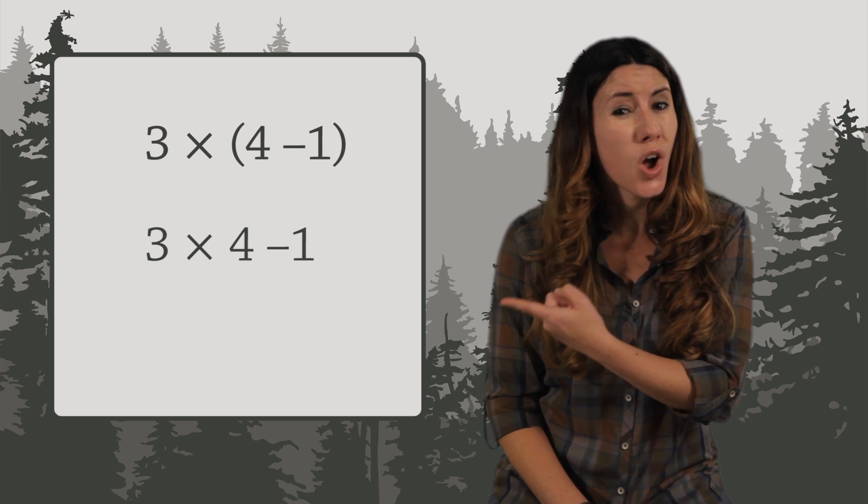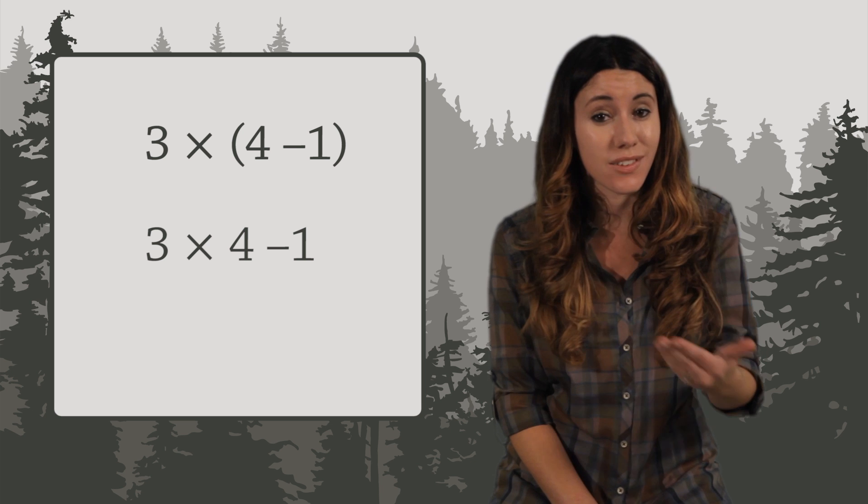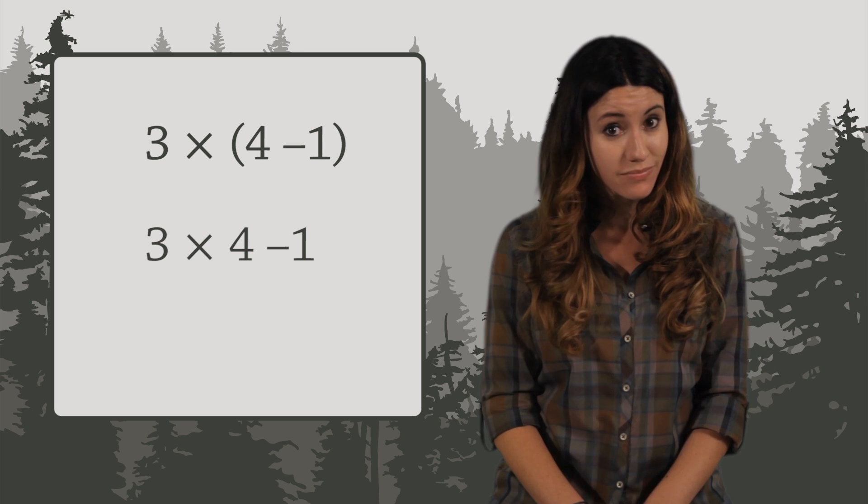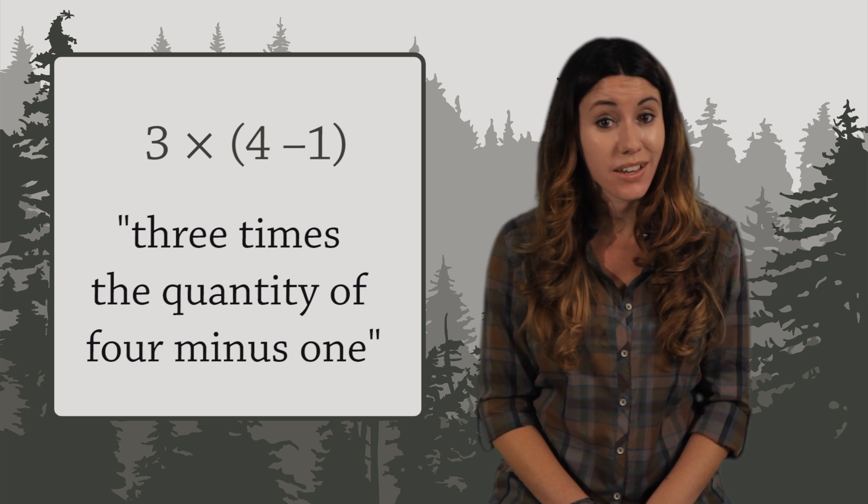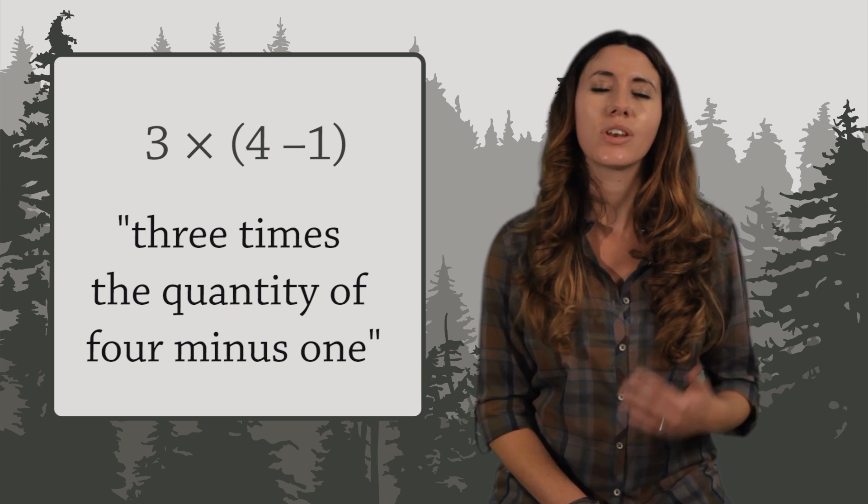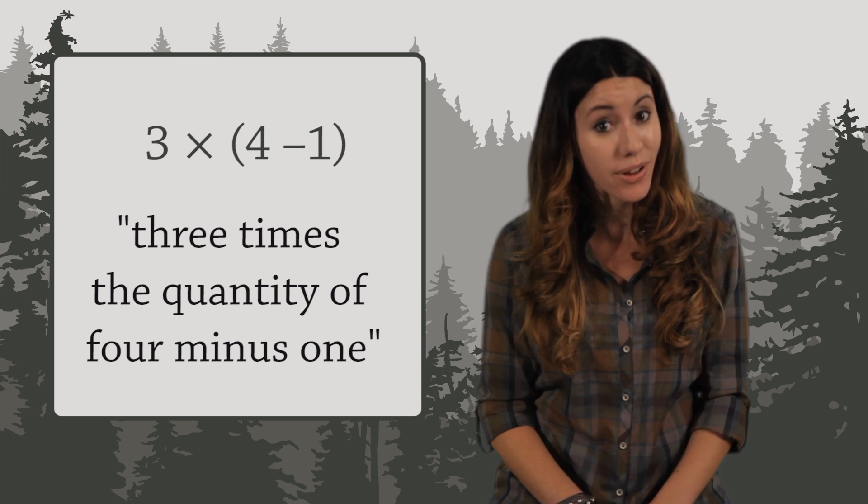We have to say something to our friend to let them know there are parentheses around the 4 minus 1. Here's how you would say it. 3 times the quantity of 4 minus 1. When you say the quantity, that's a clue that what follows next is inside parentheses.